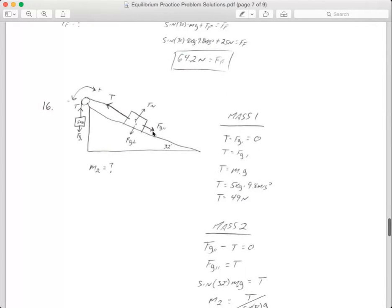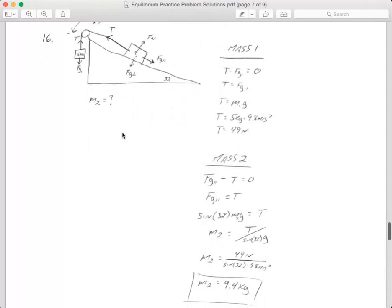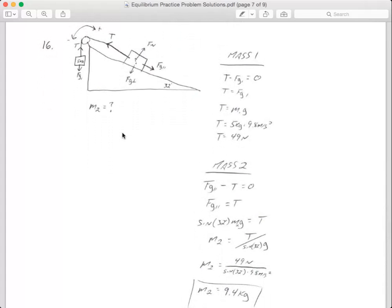Taking a look at number 16, we have two blocks on this one, so we're going to take a look at each one. A big complicated problem is really just a simple problem, or a couple of simple problems, in a row. In this particular problem, we know that this mass is 5 kg, and we're trying to figure out what the mass of the one on the ramp is. The first thing I'm going to do is figure out some stuff about the one that's hanging. The reason for that is, without knowing the mass of the block on the ramp, I don't know the normal force,